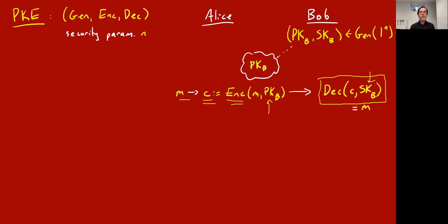This is cooler because it does not involve Alice and Bob having to get together in advance and secretly agree on a secret key that they privately store forever. Now you just need everybody to privately hold their secret key secret, but they don't have to do this collaboratively.